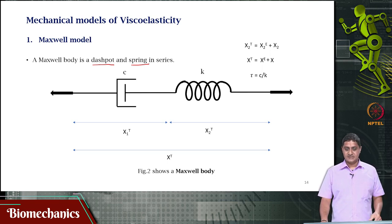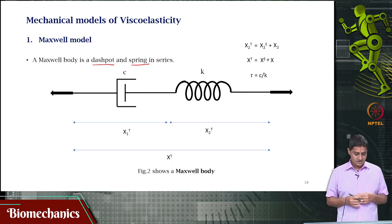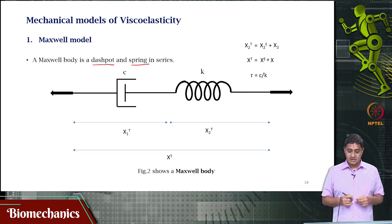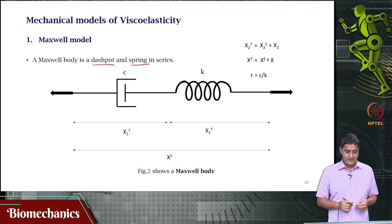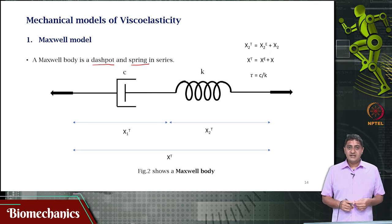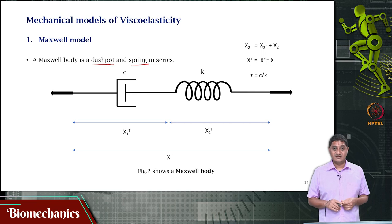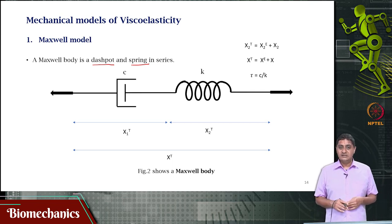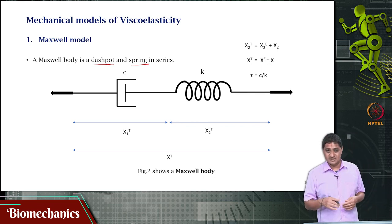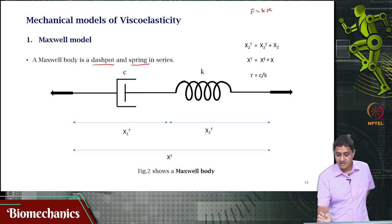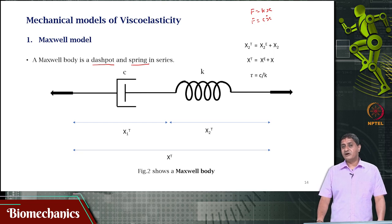Before getting into the analysis and derivation, what this means is that if I apply a force at the two ends of this body, the force will be felt equally by both the dashpot and the spring. But the deformations will not be the same. The deformation in the spring is dependent on the force applied, but the deformation in the dashpot is not directly related to the force, because it is dependent on velocity. For a spring, f = kx, and for a dashpot, f = c·ẋ.